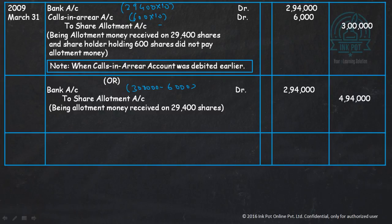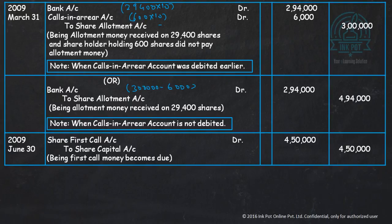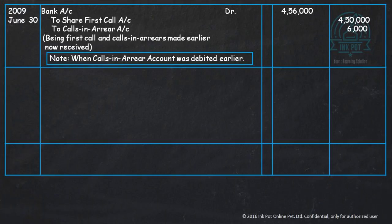Share first call is due: 30,000 shares × Rs. 15 each. Along with the first call, we have received the amount of calls in arrears. The first call was Rs. 15 per share, and the 600 shares for which allotment was not received earlier are now being received along with the first call.